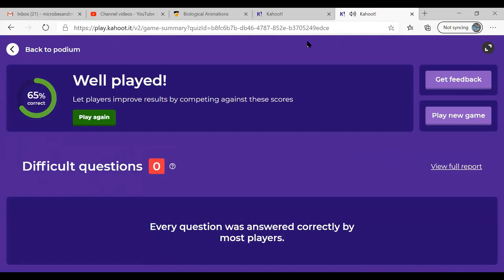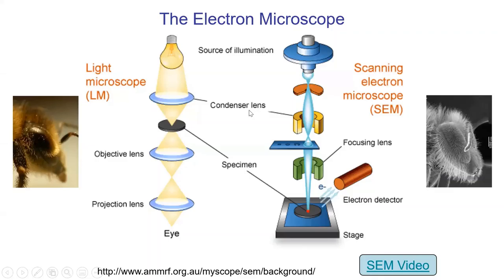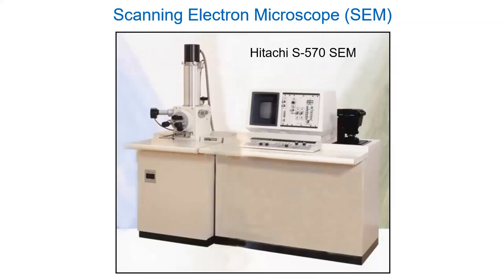Back to the PowerPoint — we're going to talk about electron microscopy. What's the deal behind an electron microscope? Comparing to a light microscope: the light microscope has light as its source of illumination, while an electron microscope uses electron beams and the lenses are made out of magnetic fields. I want to talk about two types: SEM, scanning electron microscopy, and TEM.